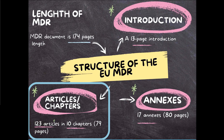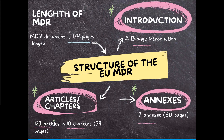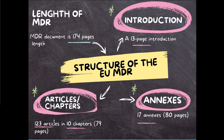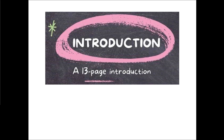At the end of the regulation you have the annexes. An annex refers to supplementary documents or sections within the EU MDR that provide additional details, guidelines, or particular requirements related to various aspects of the regulation. These annexes are an integral part of the EU MDR and help provide clarity on certain topics.